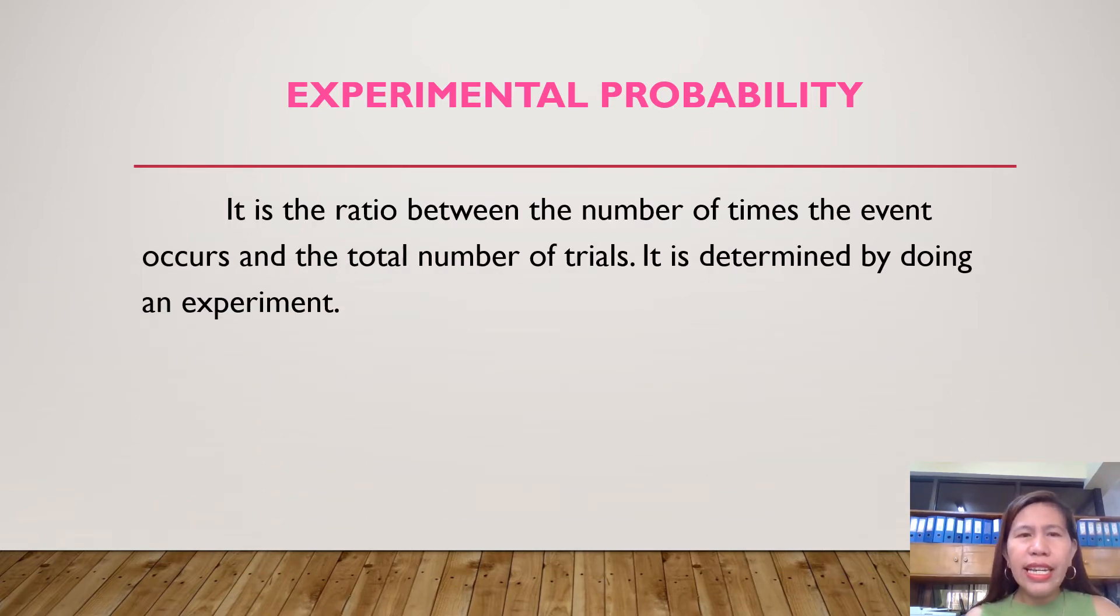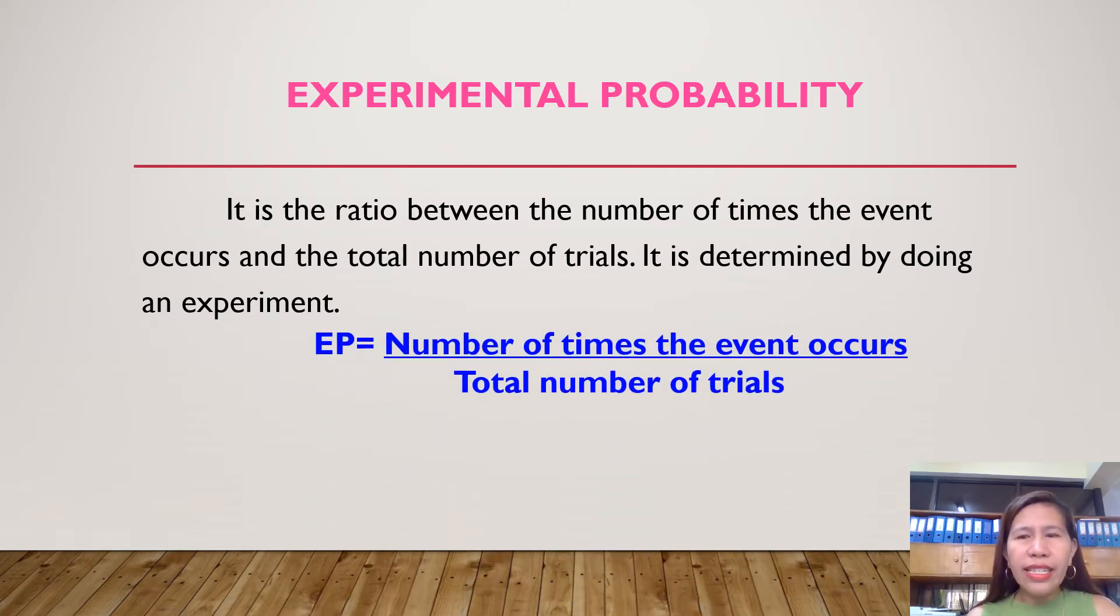Experimental probability, it is the ratio between the number of times the event occurs and the total number of trials. It is determined by doing an experiment. This is our formula, how we are going to get the experimental probability. EP, or experimental probability, is equal to number of times the event occurs over total number of trials.